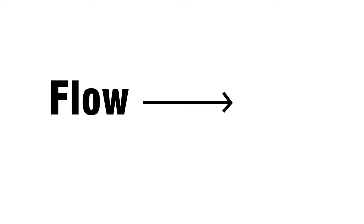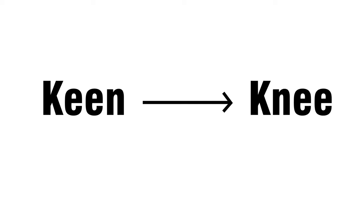Flow. It is an animal. Answer is wolf. Keen. This is a part of your body. Answer is knee.